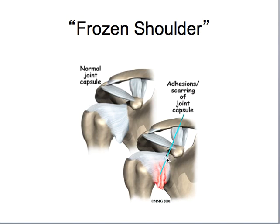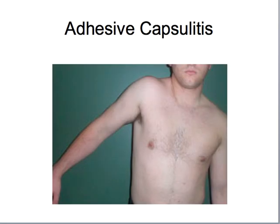In a picture showing adhesive capsulitis, the scarring typically starts on the inferior portion and they aren't able to elevate or externally rotate. You can see the compensation they use — when asked to raise the arm, they can't do it from the glenohumeral joint, so they use the whole trunk in order to get the arm up, and that's about as far as they can go.